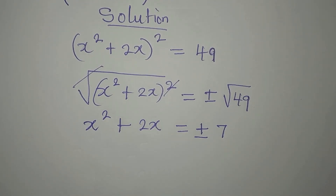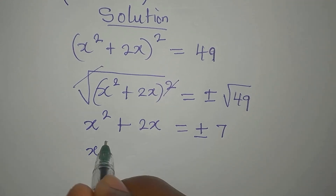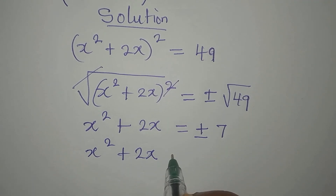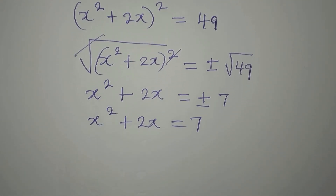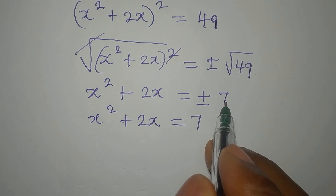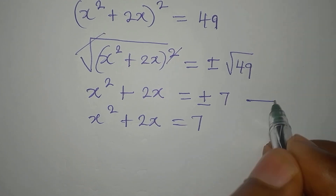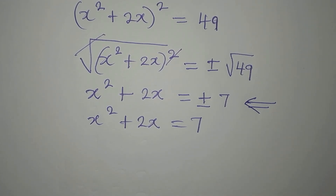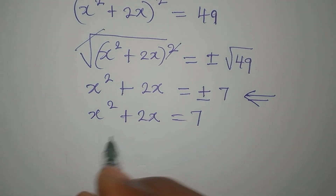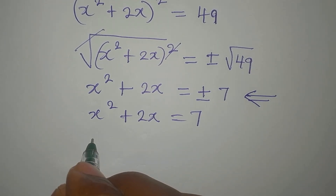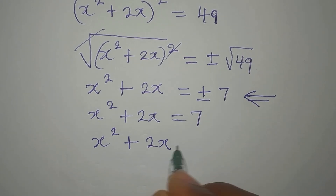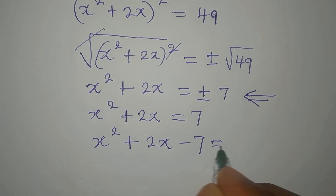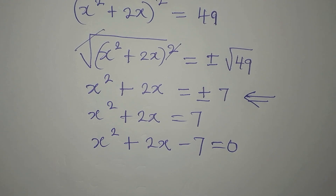So we're having two equations now. The first equation is x squared plus 2x equals 7, and the second equation will be negative. From the first equation we have x squared plus 2x minus 7 equals 0, and we are going to solve this using the formula method.